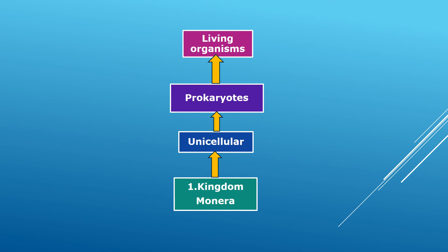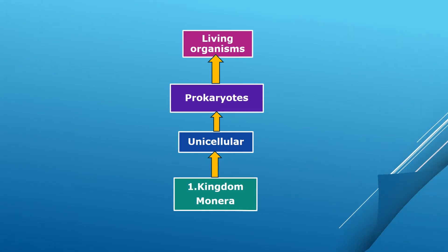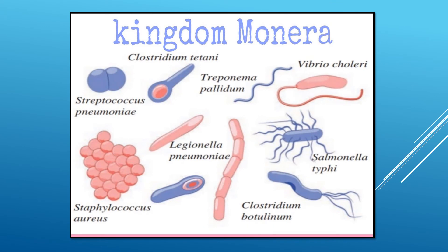In short, kingdom Monera is a unicellular prokaryotic living organism — unicellular means containing only one cell, and prokaryotic means not having a nucleus with bound cell organelles. Examples of kingdom Monera include: Streptococcus pneumoniae, Clostridium tetani, Treponema pallidum, Legionella pneumoniae, Staphylococcus aureus, Vibrio cholerae, Salmonella typhi, and Clostridium botulinum.